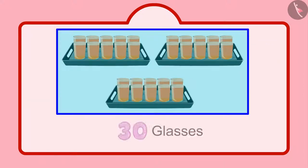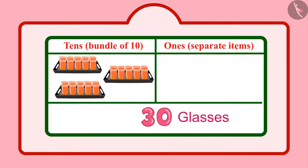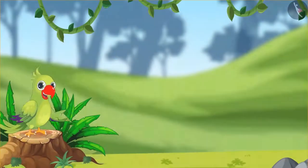That means 30 glasses, which we write like this. So, children, in 30, there are 3 tens and 0 units. This means today 30 glasses of sherbet were made in Chotu's house.